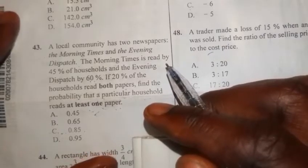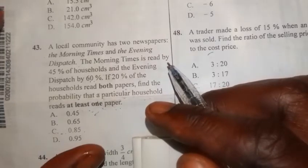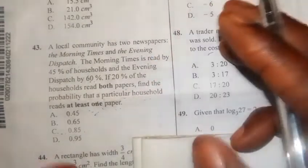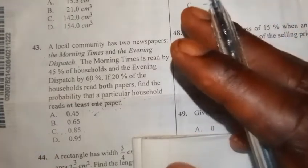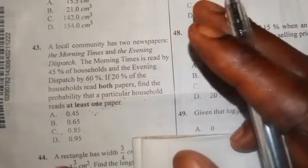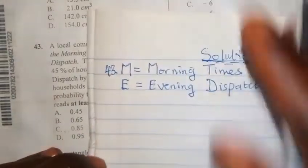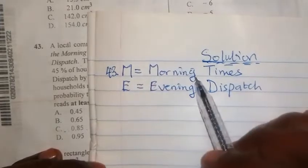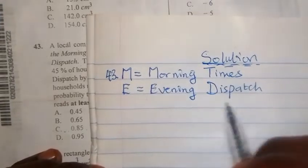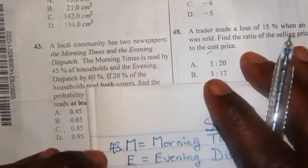To start with, let me emphasize that this problem only deals with those households that read at least one paper. We are not concerned about those that do not read anything; we are only going to focus our attention on those that read at least one paper. M represents Morning Times and E represents the Evening Dispatch.